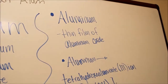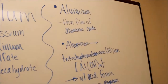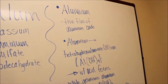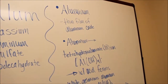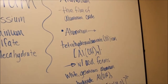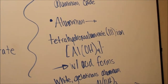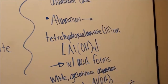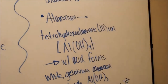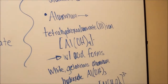Aluminum is considered a reactive metal, but because its surface is usually protected by a thin film of aluminum oxide, it reacts slowly with acid. It does, however, dissolve quickly in basic solutions. Excess hydroxide ion converts the aluminum to the tetrahydroxoaluminate 3-minus ion.